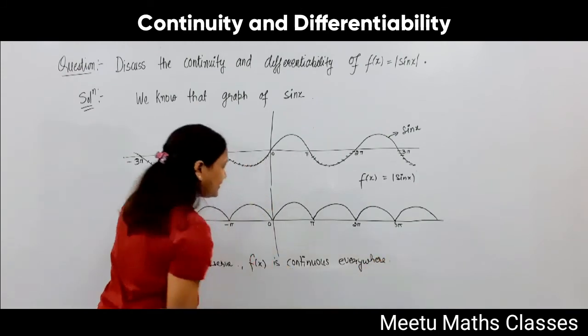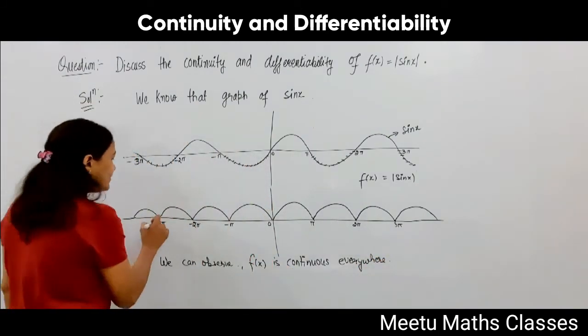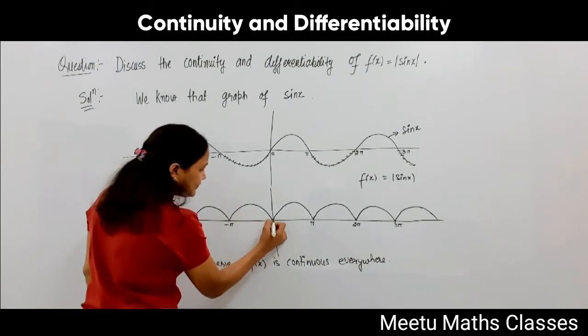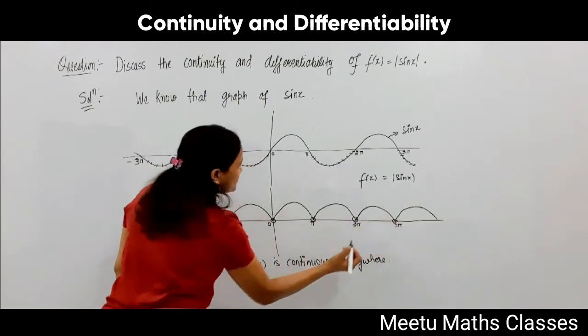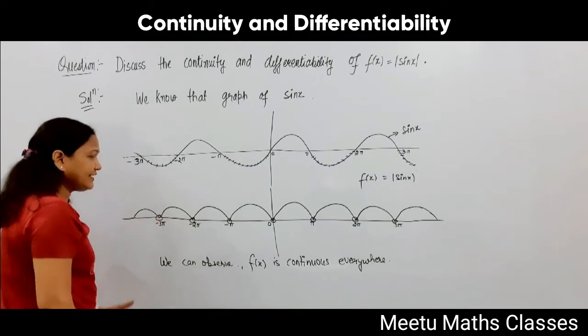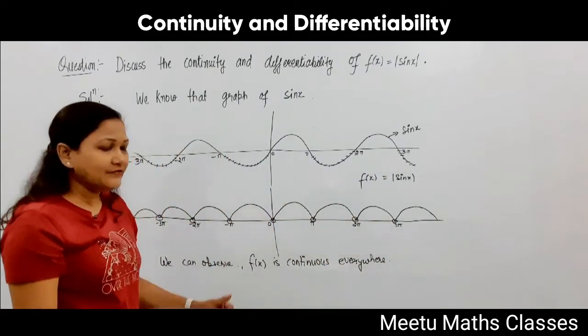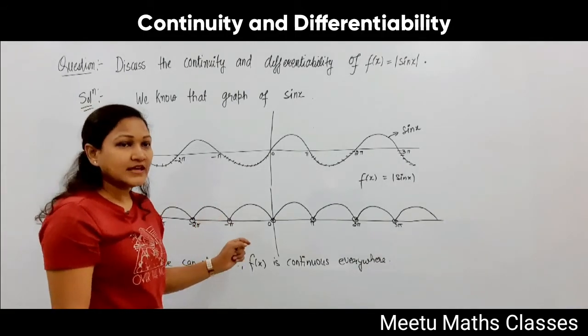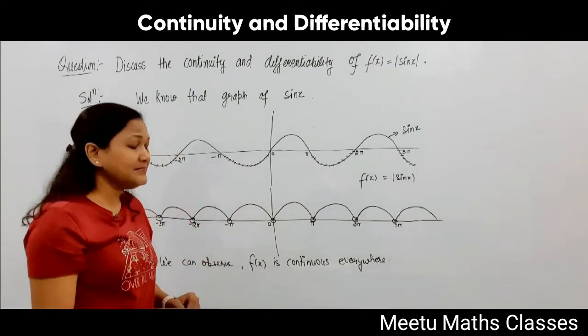And now if we discuss about the differentiability, you can observe that there are corner points at integral values of π. In the graph you are getting corner points at integral values of π, and if we are getting corner points, then at each and every corner point the function will become non-differentiable.